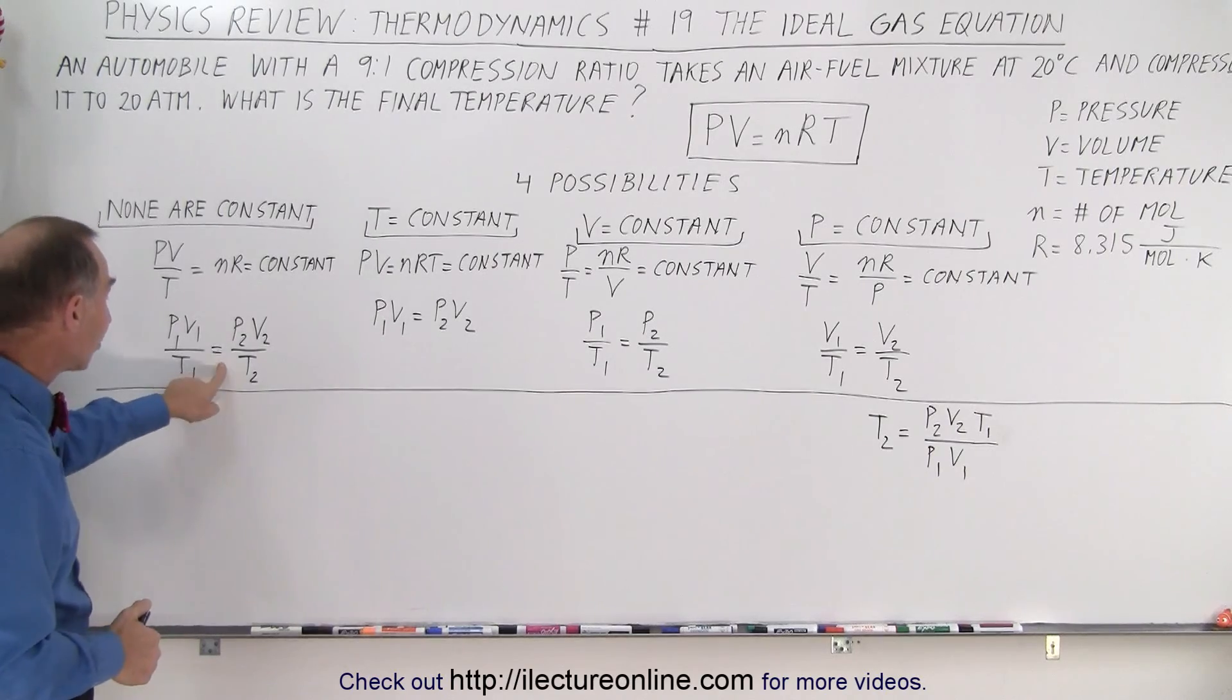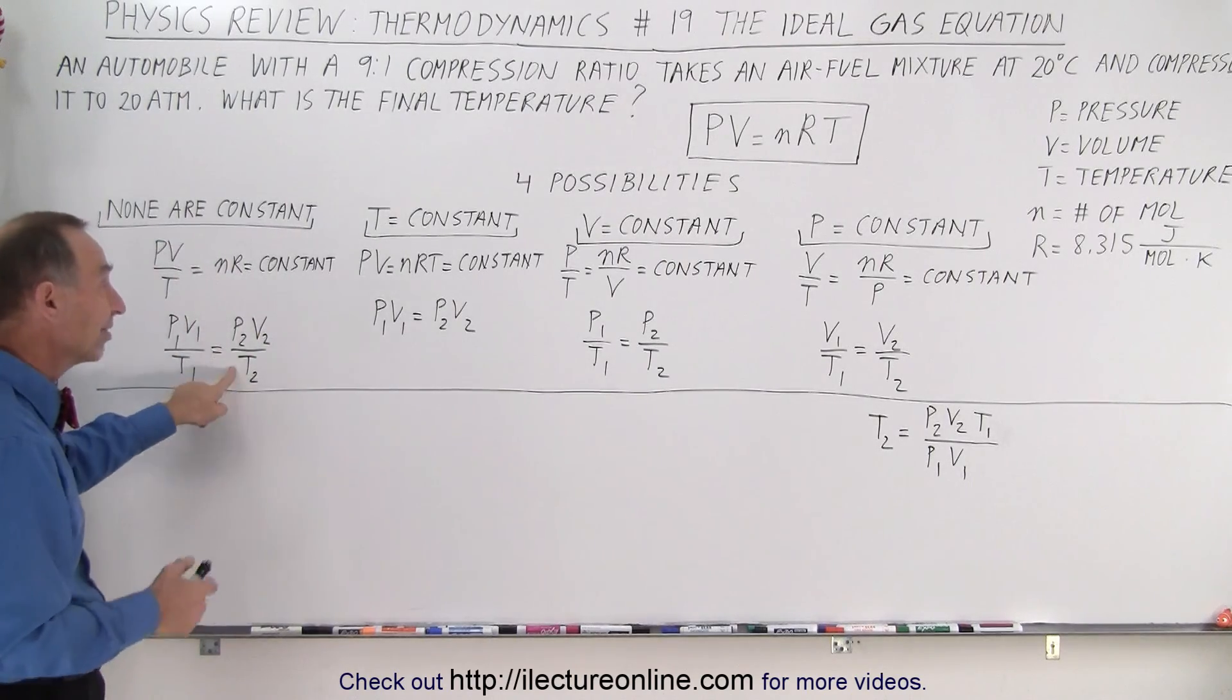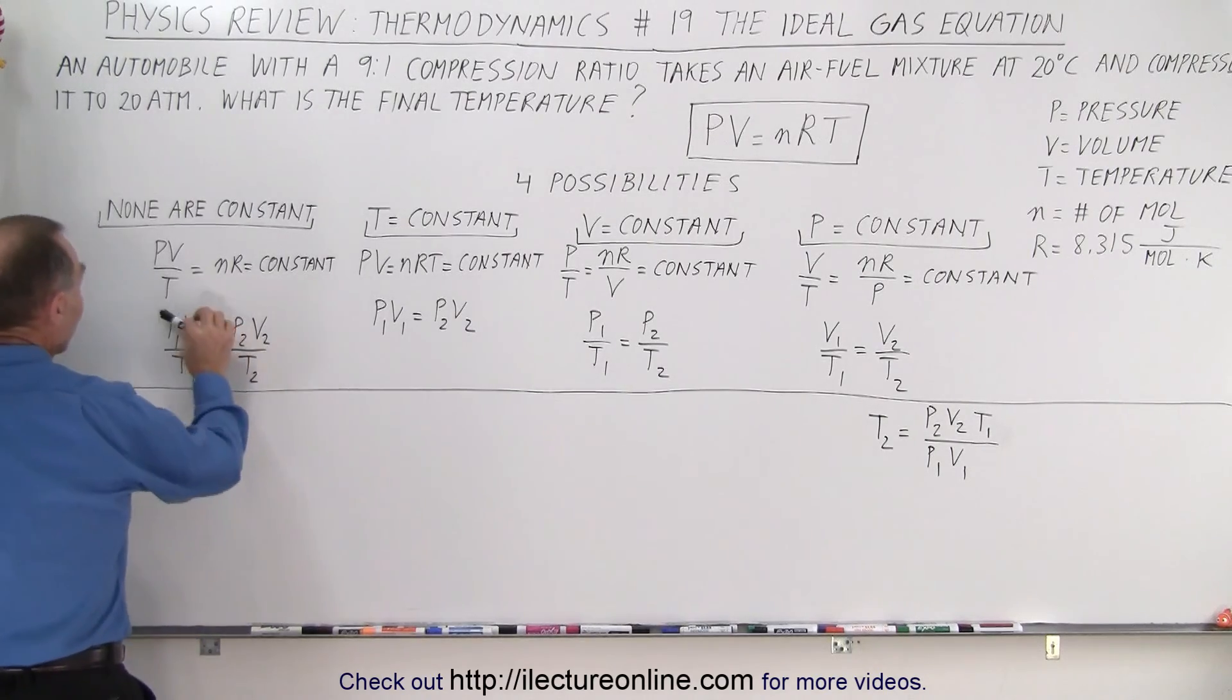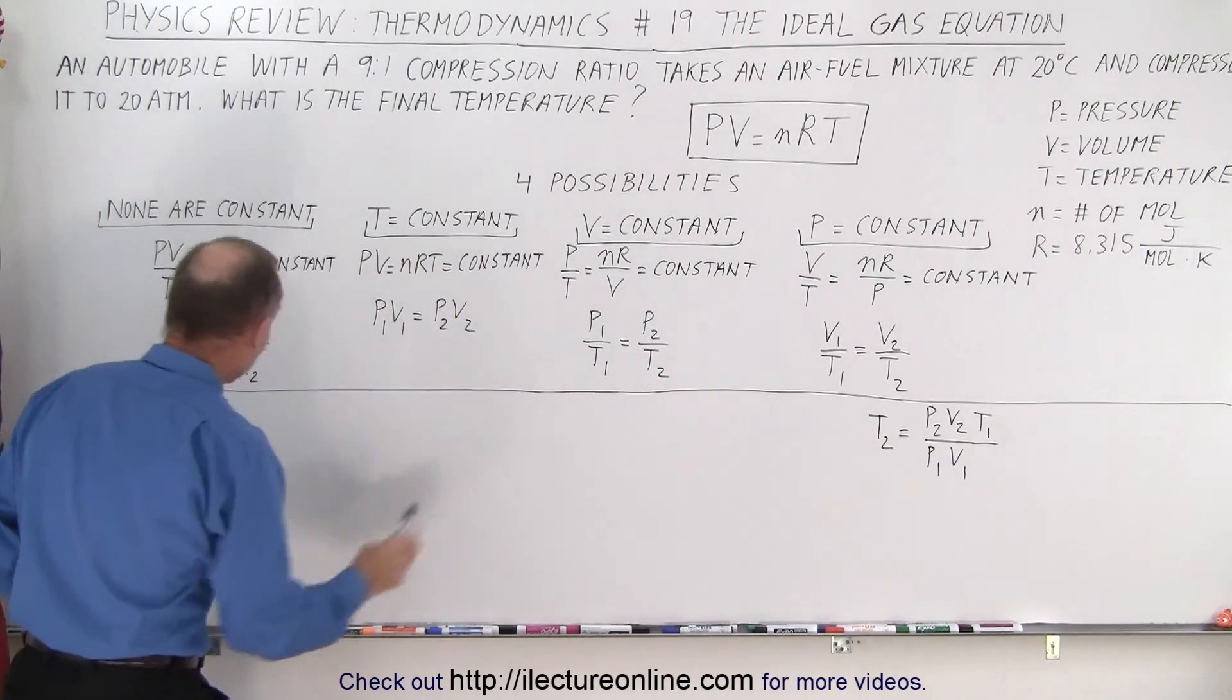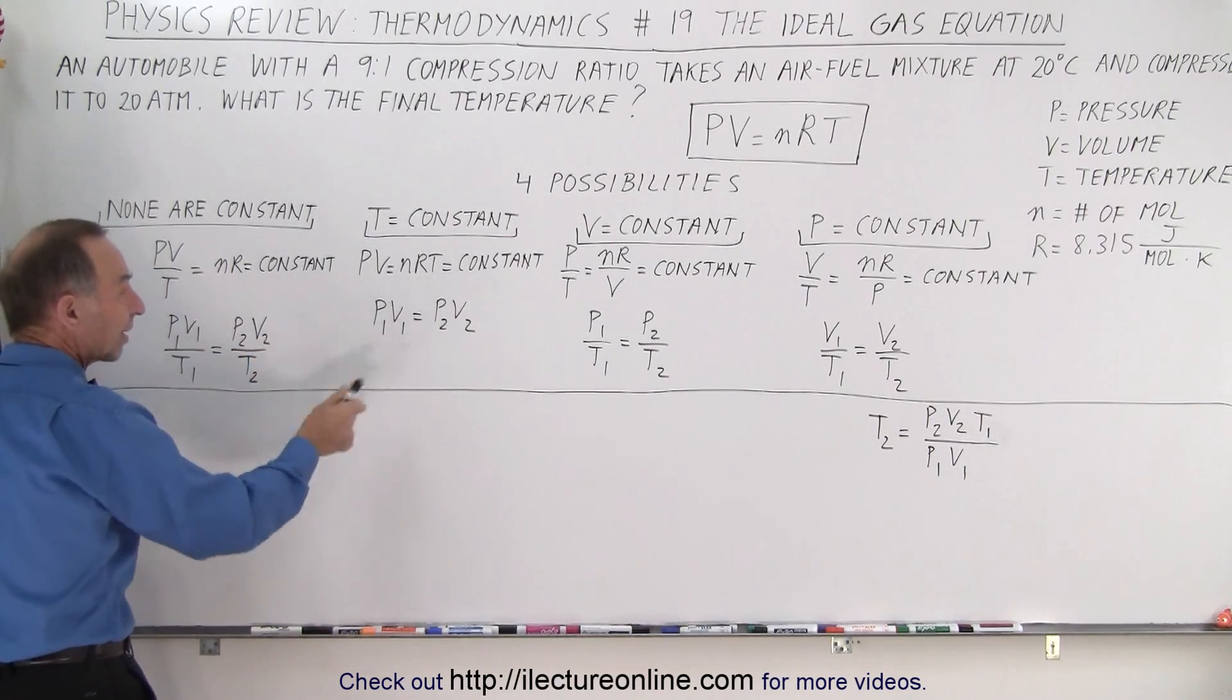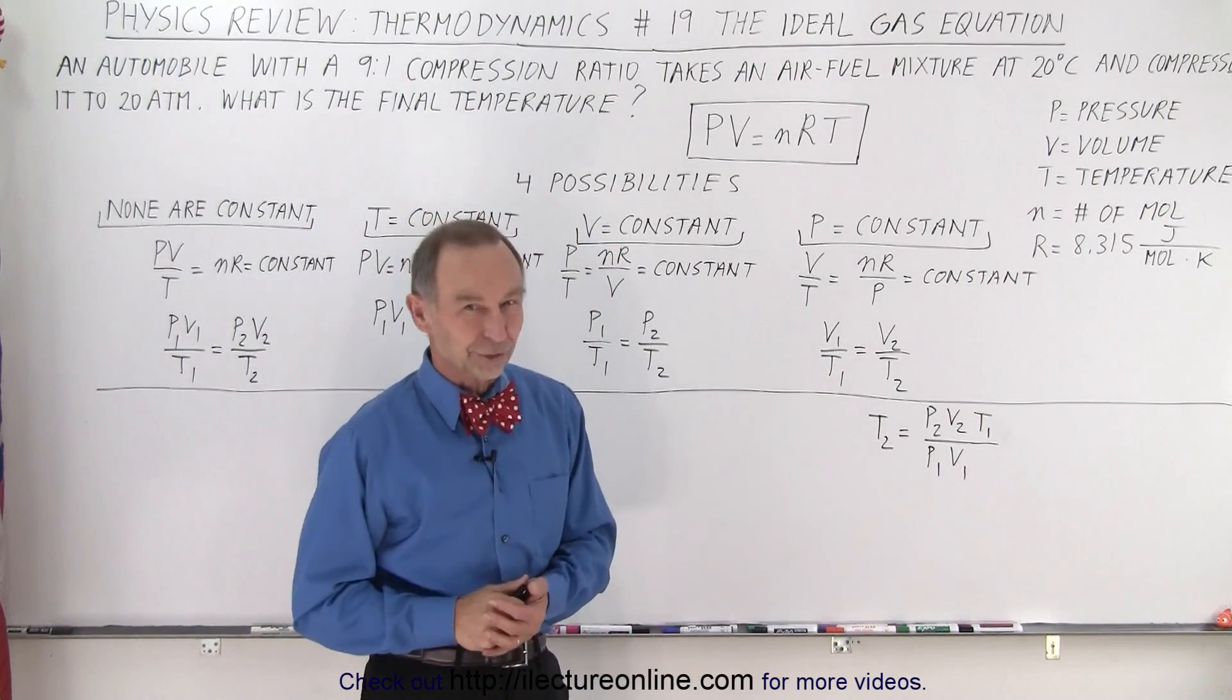Then we solve this equation, or in another situation would be one of the other three equations. We solve this equation for, in this case, the final temperature, which is what they're looking for, T2. This means we move T2 over to the numerator on the left side, we move P1 times V1 to the denominator on the right side, and we move T1 on the left side to the numerator on the right side. Now we have the same equation in the form where we can solve for T2, and the rest is just algebra.